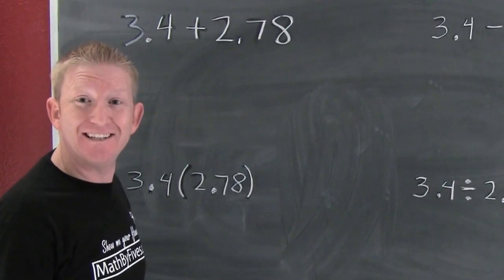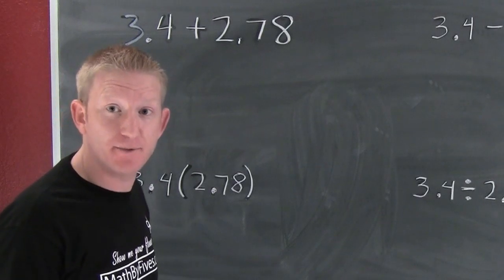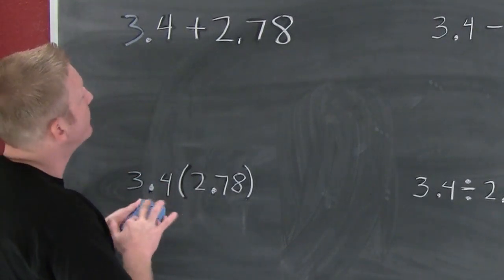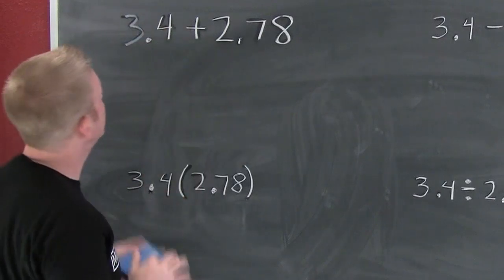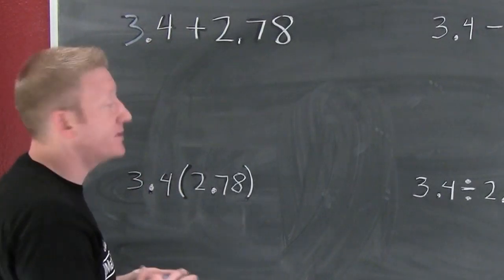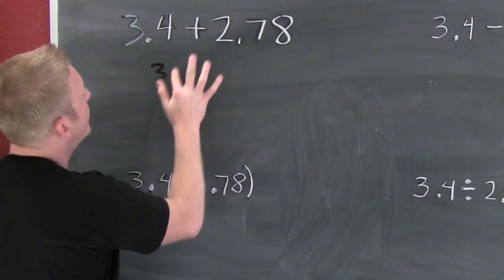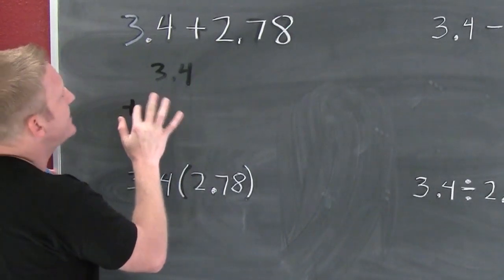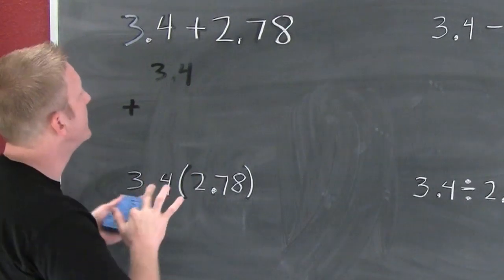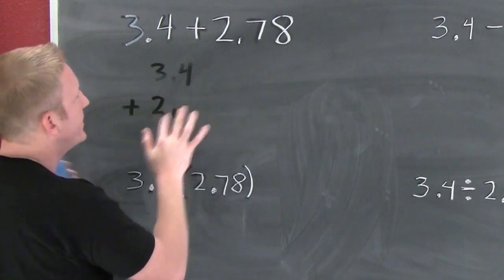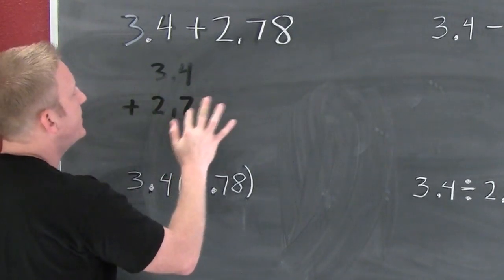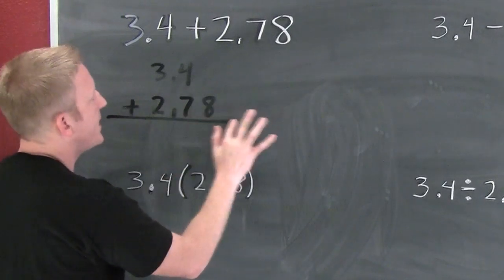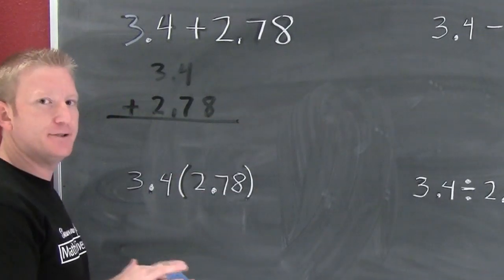The most important part about adding and subtracting decimals is lining up the decimal places. So I'll arbitrarily put the bigger one on top — 3.4. And then I'm going to add to it 2.78.